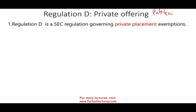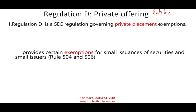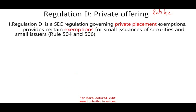Regulation D provides exemptions. If you're a small company, you go under Regulation D — and specifically, you will follow Rule 504 and Rule 506 to be exempt. There is no more Rule 505; if you see that in an answer, cross it out.